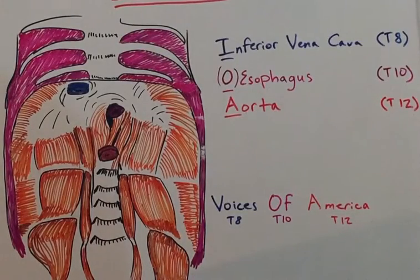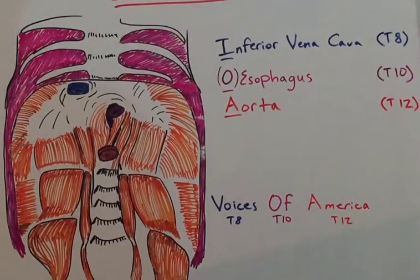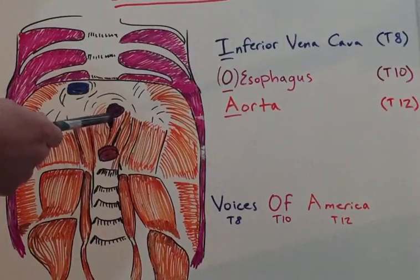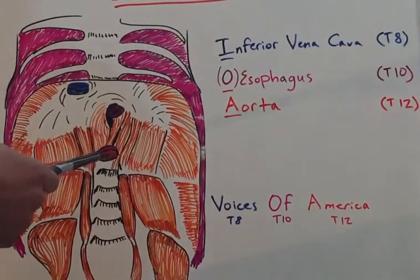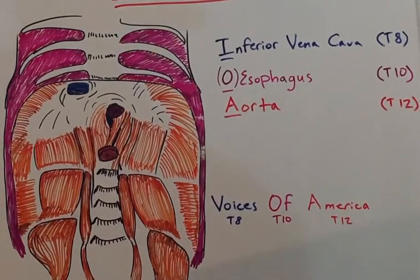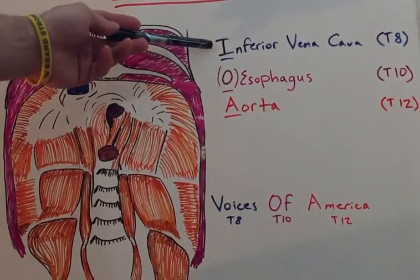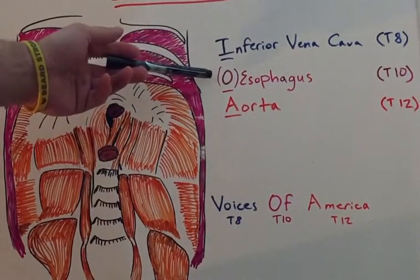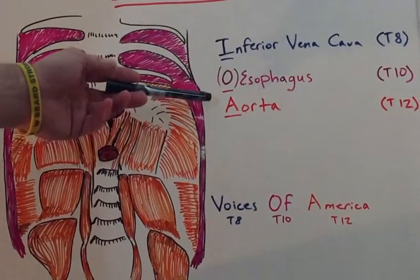There are a variety of structures which pierce the diaphragm and they are clinically important. Here we have the inferior vena cava, the esophagus, and the aorta. Each of these pierces the diaphragm at a different vertebral level: the inferior vena cava at T8, the esophagus at T10, and the aorta at T12.